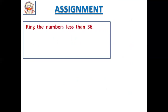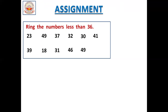Before concluding, I will give you an assignment. Ring the numbers less than 36. Compared to 36, which are the small numbers — that one we should circle. See the numbers: 23, 49, 37, 32, 30, 41, 39, 18, 31, 46, 49, 35. These are the numbers, children. Compare to 36, which numbers are small — that one we should circle.